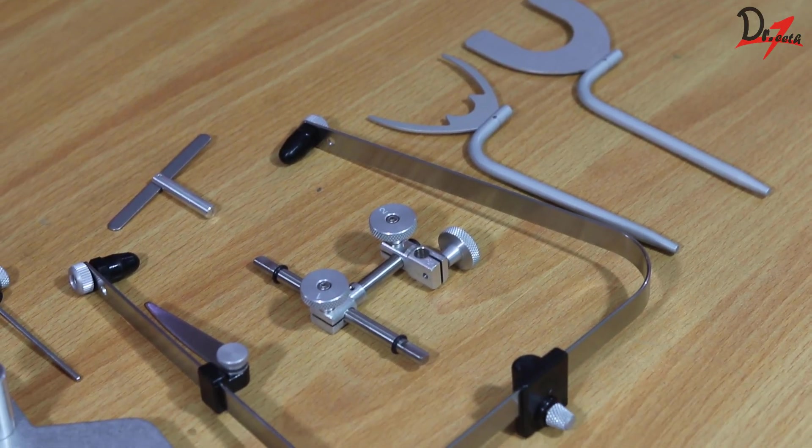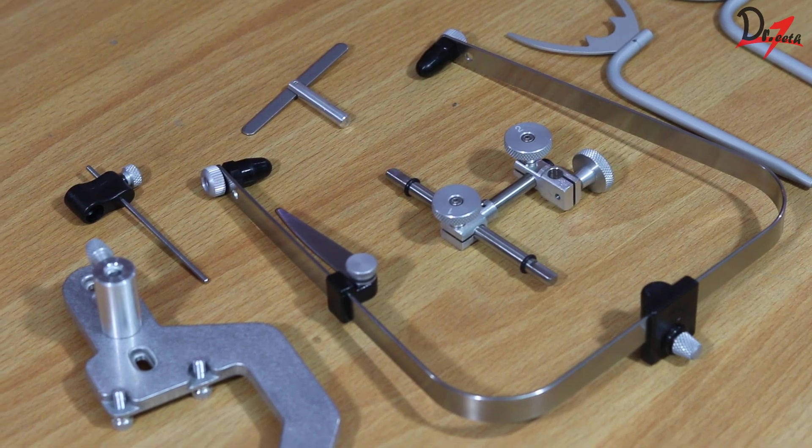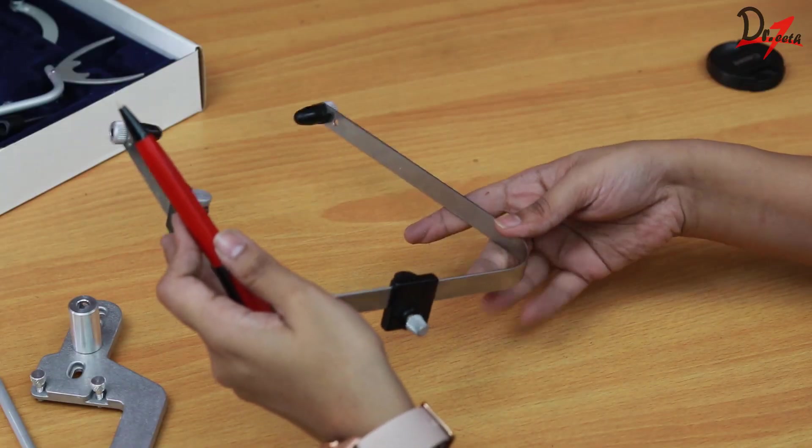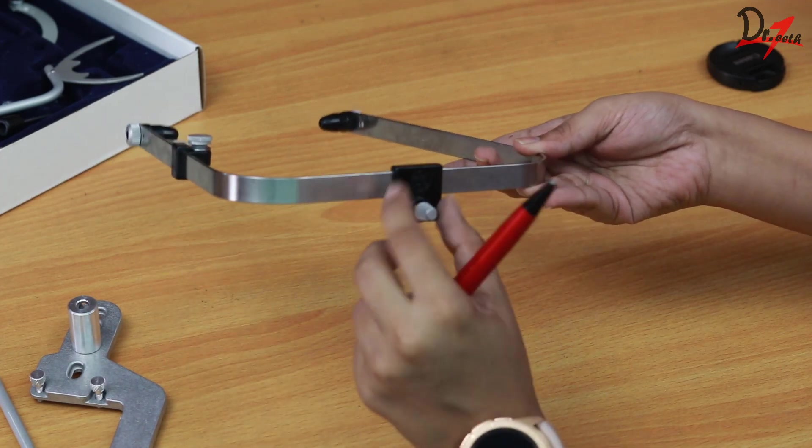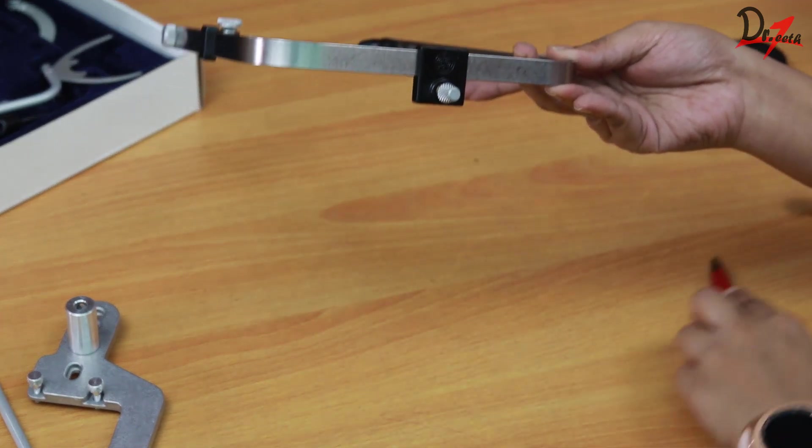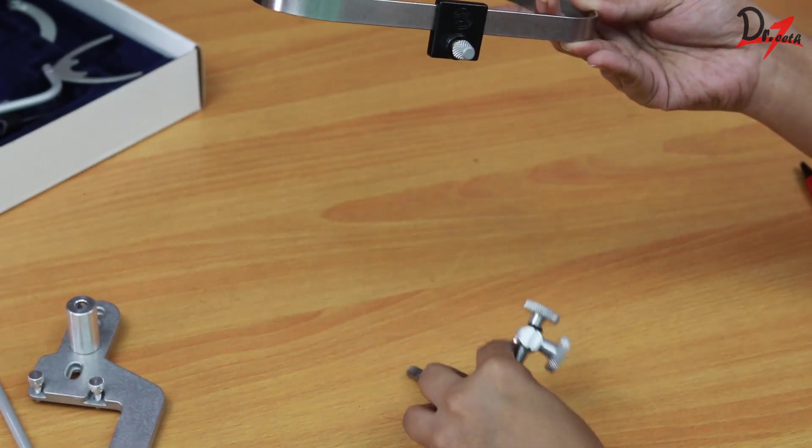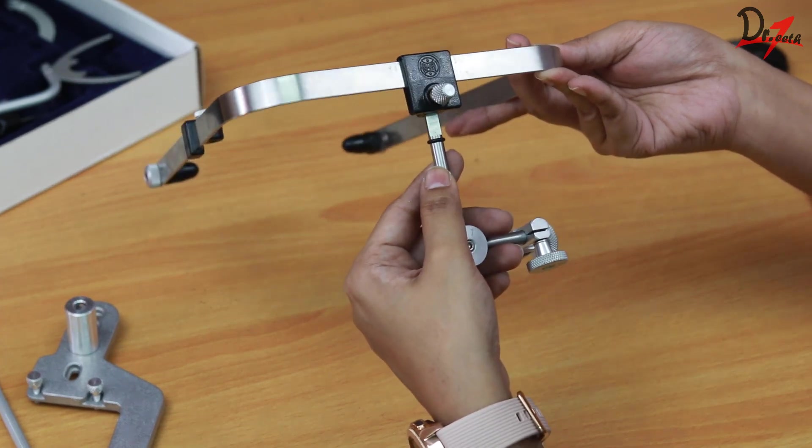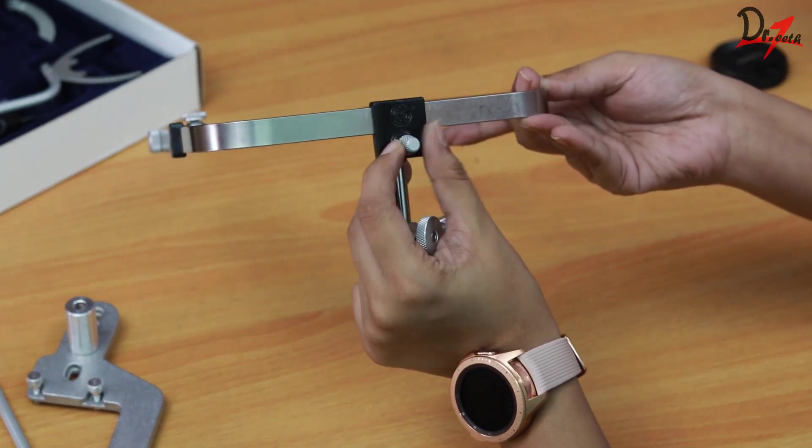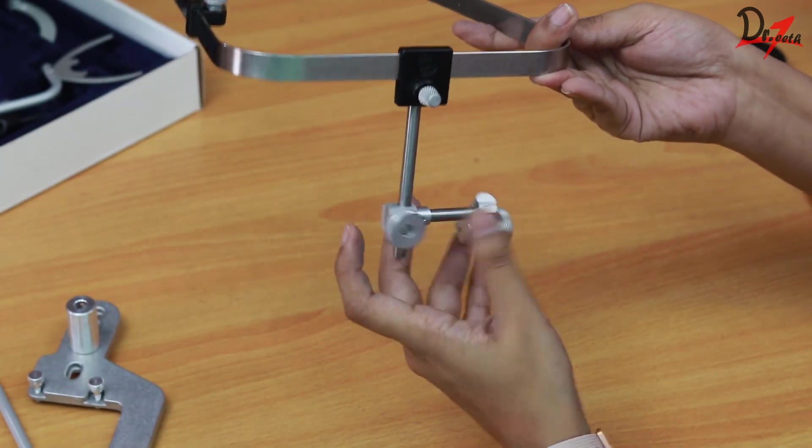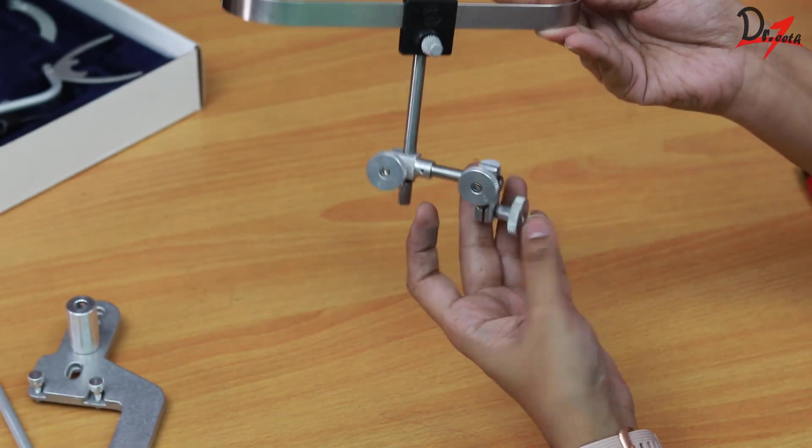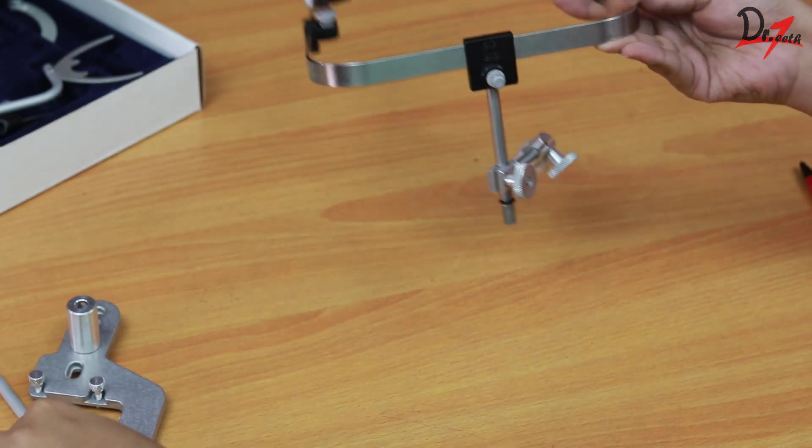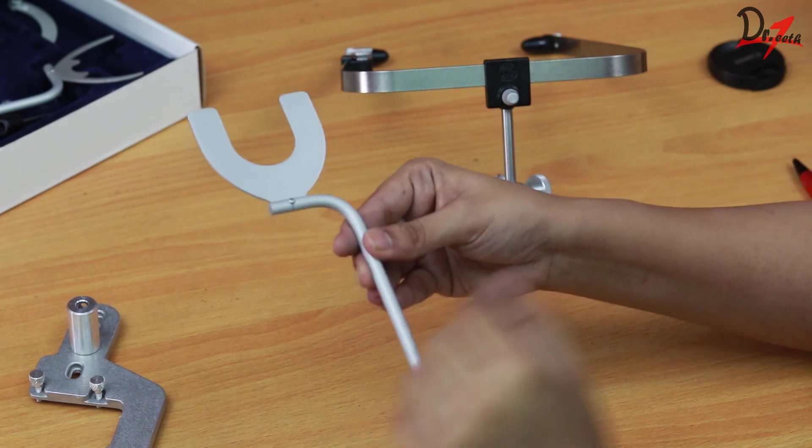Now let me just give you a quick demonstration on how to assemble this and how to make the face bow record. So I'm taking the U-shaped frame and loosening the screw so that my locking device can fit inside. Now that I have fitted it inside, I'm just locking the screw back again so that the assembly does not move.